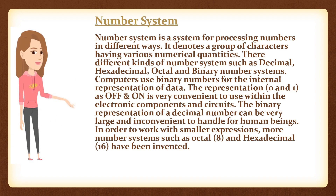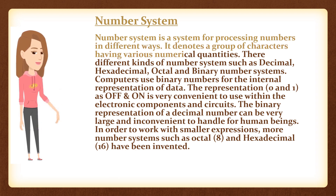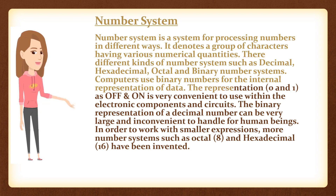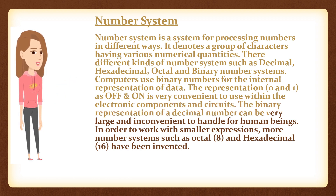Number system is a system for processing numbers in different ways. It denotes a group of characters having various numerical quantities. There are different kinds of number systems such as decimal, hexadecimal, octal and binary number systems. Computers use binary numbers for the internal representation of data. The representation of 0 and 1 as off and on is very convenient to use within the electronic components and circuits.